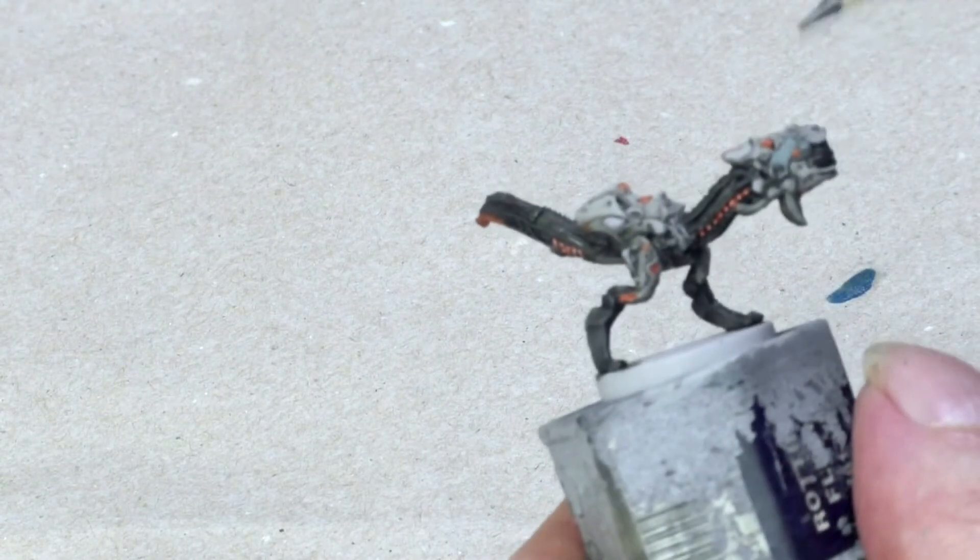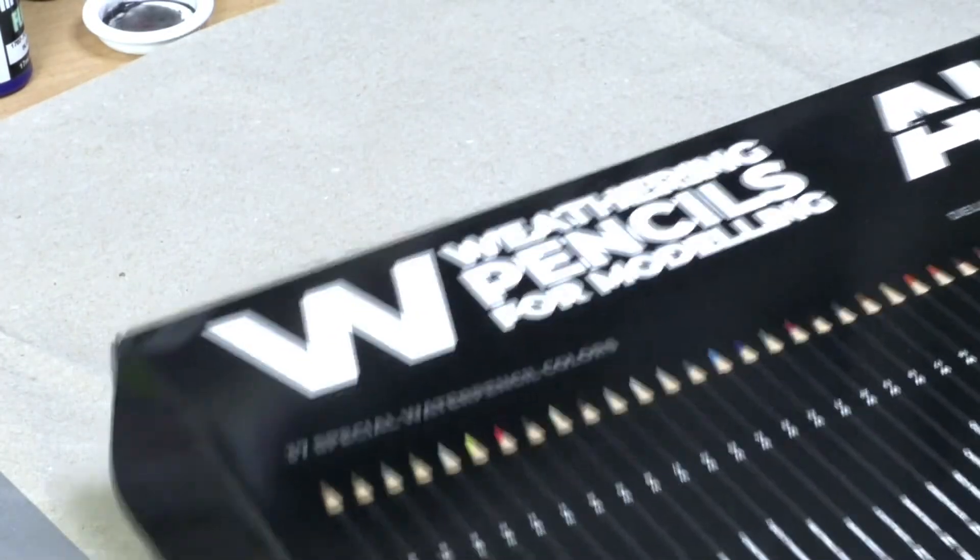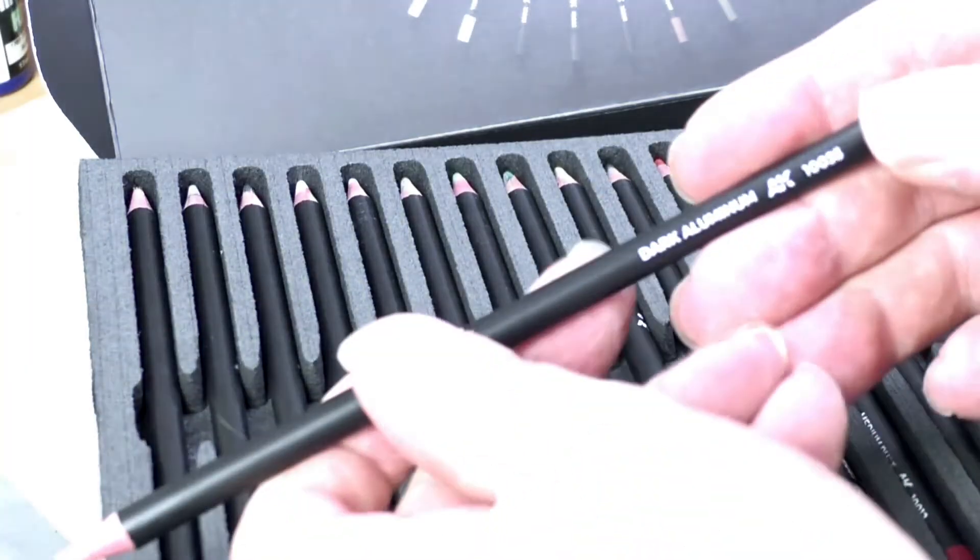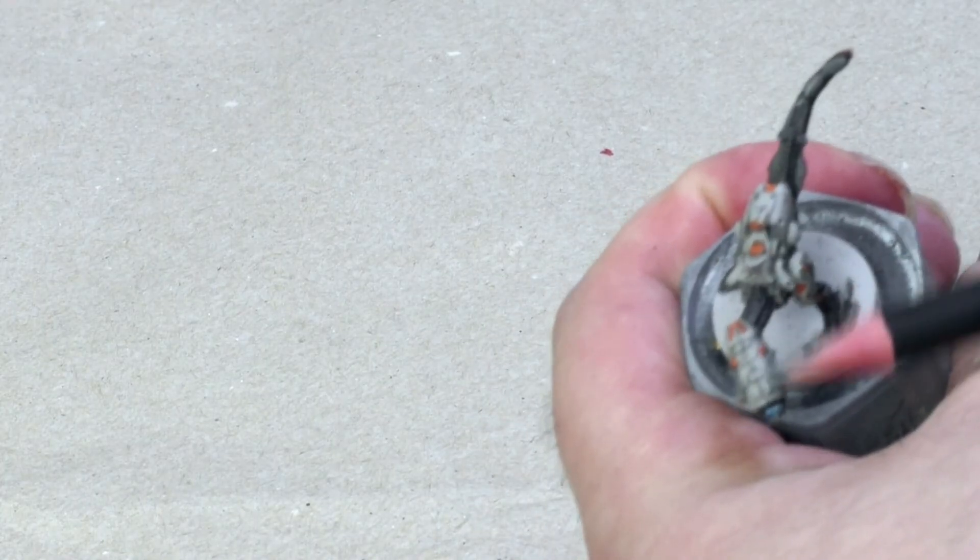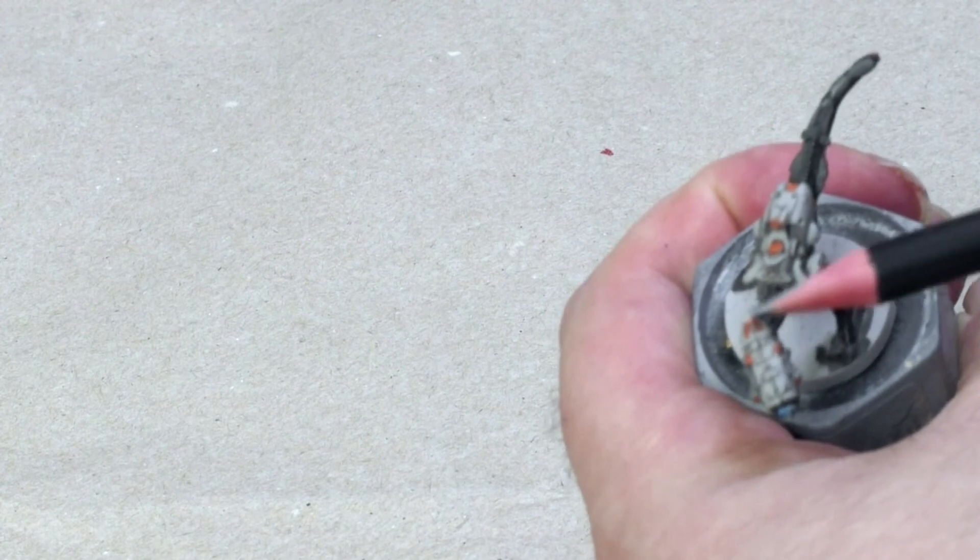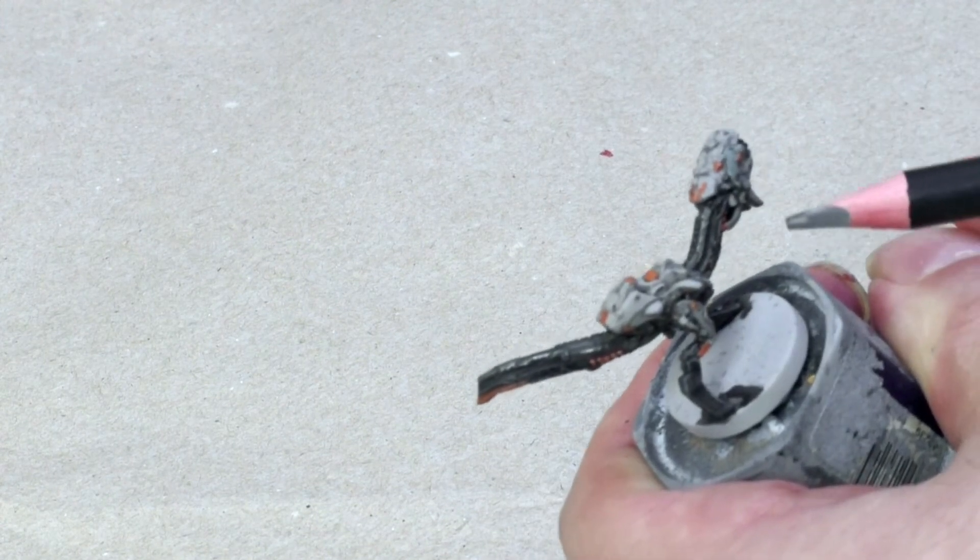I use the pencil mostly on the dark metal parts. For the lighter parts, I switched to a grayish weathering pencil. Dark aluminum. Although I personally very much like those weathering pencils, it's not absolutely necessary to use them. Instead, you could just use the regular pencil on the light metal parts as well.